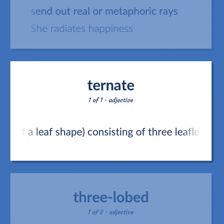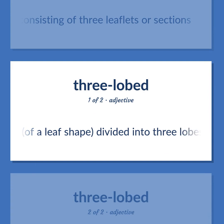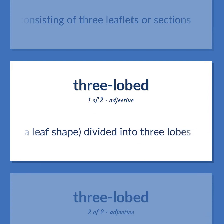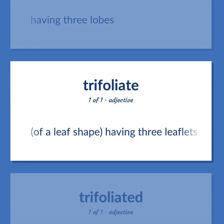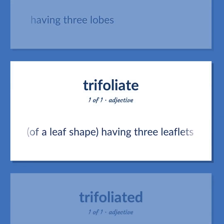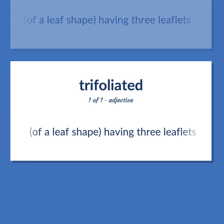Leaf shapes: Trifoliate — consisting of three leaflets or sections. Trilobate — divided into three lobes. Having three lobes. Of a leaf shape: having three leaflets. Become our student and get access to effective and free educational materials. Subscribe to our YouTube channel to become a part of our growing YouTube community and to learn English effectively.